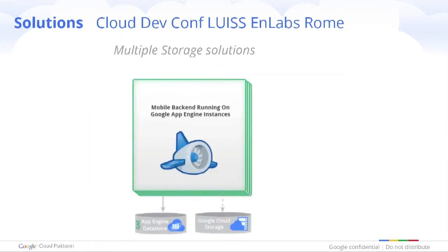Focusing more on the backend itself, you can directly store your application data in two kinds of storage. There is the App Engine Datastore — which we have now renamed as Cloud Datastore — from which you can connect from anywhere. We now have four storage mechanisms with Google Cloud Platform. You have the Cloud Datastore, which is a NoSQL ultra-scalable datastore where you can store terabytes of objects.